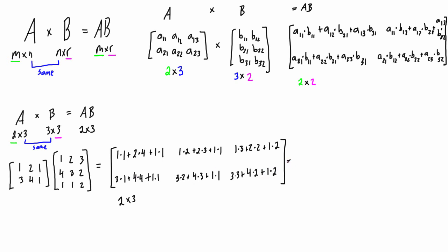Now we just simplify each entry. We get 1+8+1 = 10, then 9, then 9 for the first row. For the bottom row we get 20, 19, and 19. So this is the two by three matrix we get when we multiply A times B.